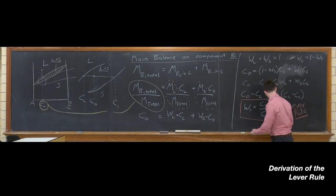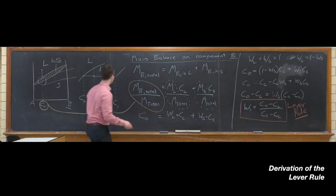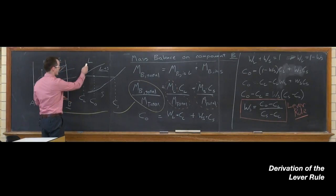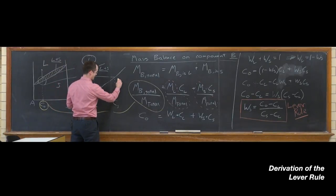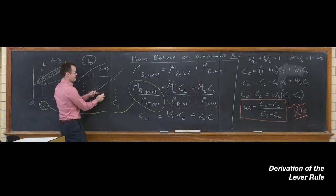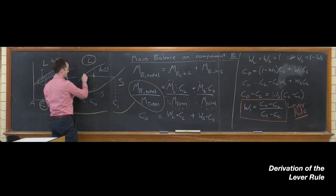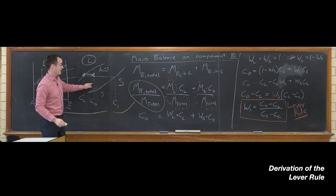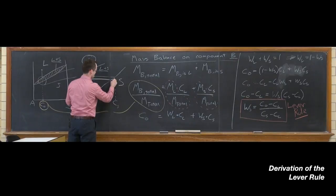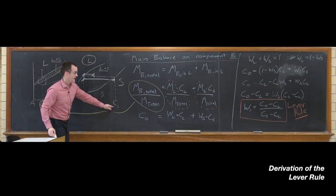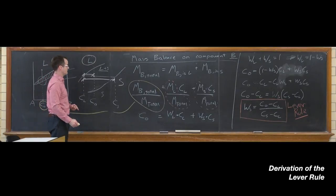So this is the lever rule. This is the lever rule. And it tells us that if we want to find out how much of the system exists as the liquid, we have to take, oh sorry, I derived it for the solid. I'll show you in a second what it would be for the other side. But here's solid. If we want to find out how much of the system is solid, we take the opposite side of the tie line, that is C-naught minus C-L divided by the total C-S minus C-L.